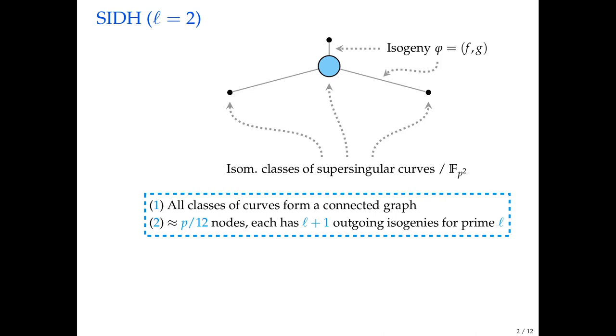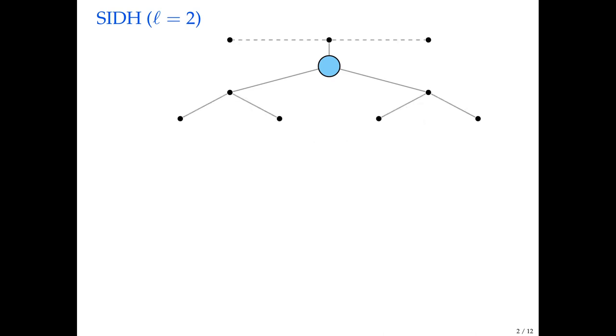When we look at the whole graph, it turns out we have about P over 12 of them for a parameter P. If we look at a local view, so we look at a single node, then we see that if we fix some prime L, then at each node we'll have L plus one outgoing isogenies. In this case, I printed a big blue dot here, which is a starting curve, one node. From that node, we see three outgoing edges, which go to other nodes. We can continue this picture, since every node or essentially every node is going to have three outgoing edges.